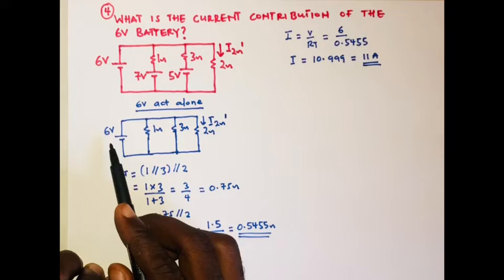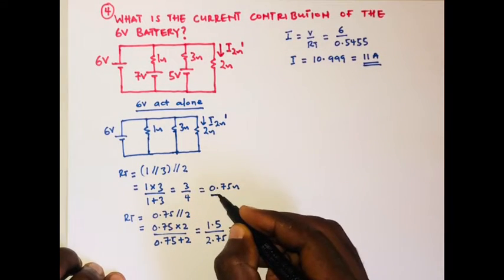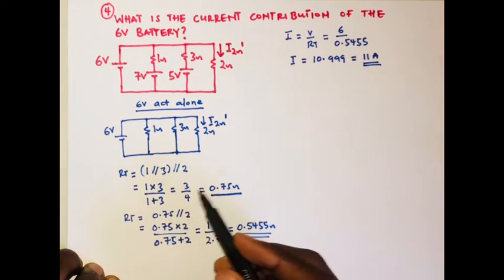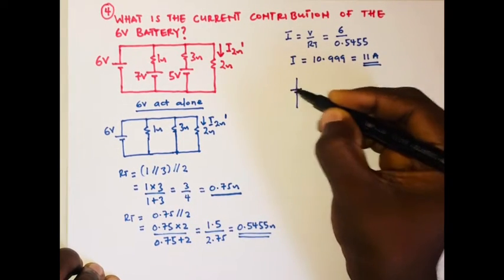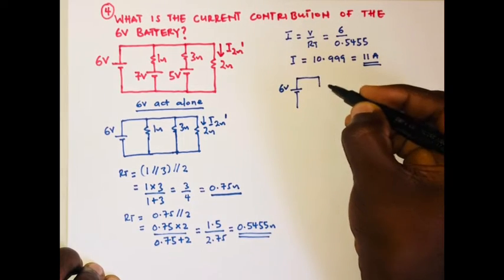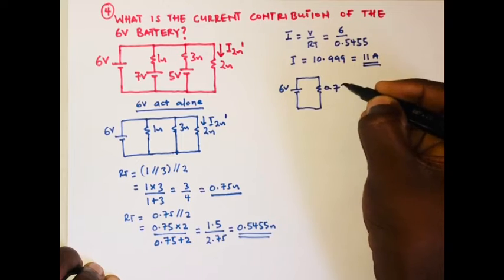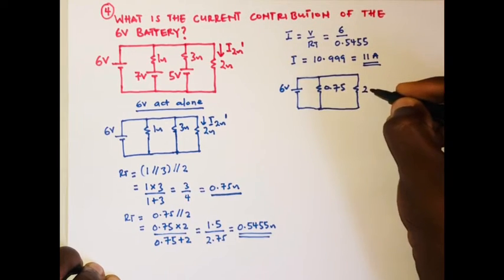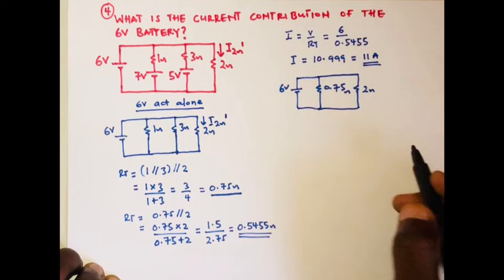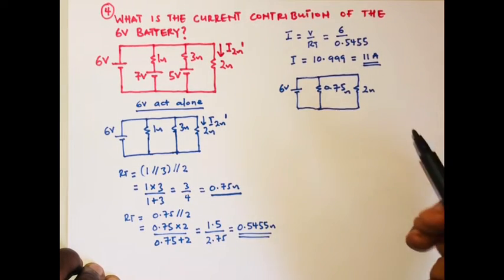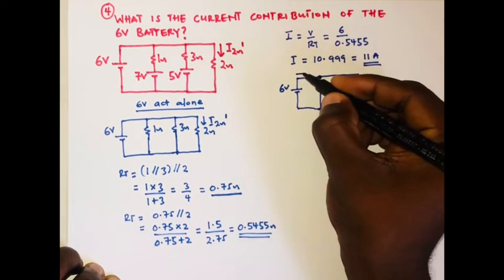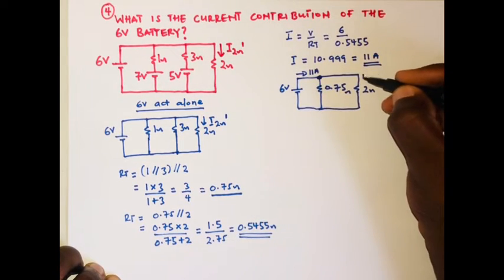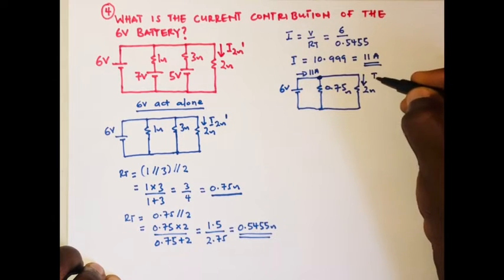At this point, 0.75 is the combination of one and three. So we can redraw the circuit with the six volts, one and three combined as 0.75 ohms, and the two ohm resistor. We can now use the current division rule to split the current — we have 11 amperes approaching this junction, and we are interested in the current flowing through the two ohm resistor, that is I₂Ω prime.